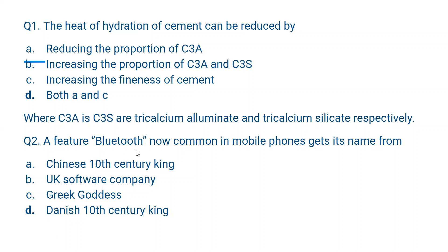Question number 2. A feature Bluetooth, now common in mobile phones, gets its name from: A. Chinese 10th century king? No. B. UK software company? No. C. Greek goddess? No. D. Danish 10th century king? Yes, D is the correct answer. Danish means Denmark. In the 10th century, there was a king in Denmark named Bluetooth who united different tribes living there. Similarly, Bluetooth technology connects different devices together.